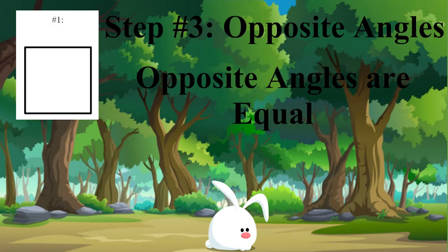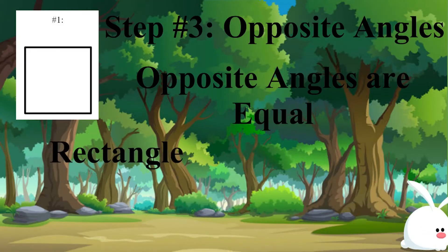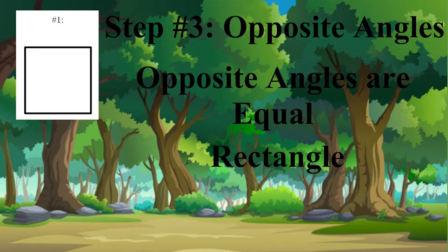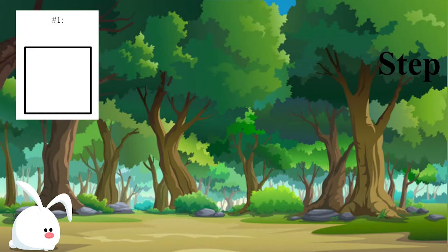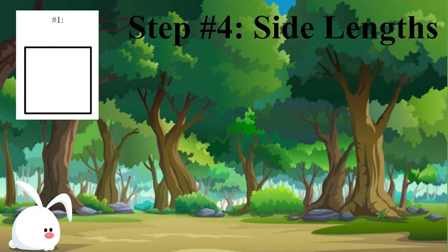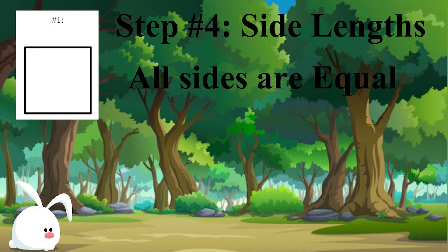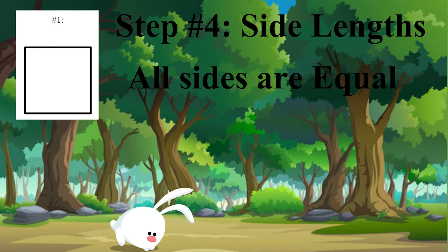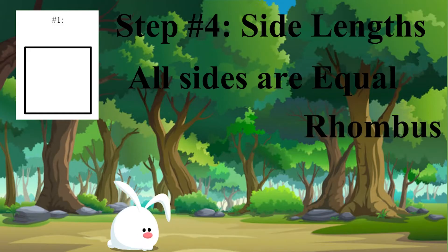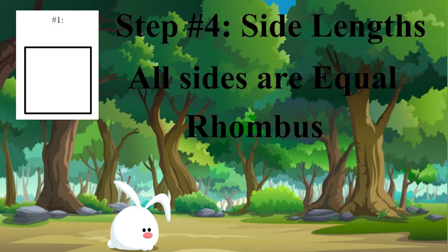This shape has four equal angles, so that means the opposite angles are already equal to each other. What that means is that we can put this figure under the rectangle category. And that may look like it's the end of it, but no — we can go even further. Let's take a look at our side lengths. This shape has four equal side lengths; all of the sides are equal. That means we can put it in the rhombus category as well, because a rhombus has four equal sides.